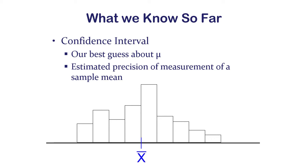We've got our sample mean right there and we calculate a confidence interval. The ends of the arrows are the confidence interval in this little diagram.